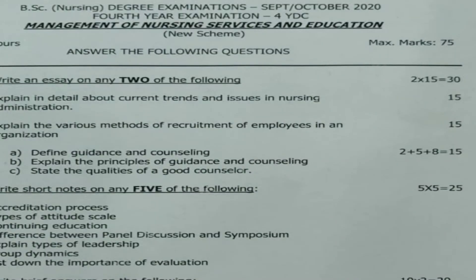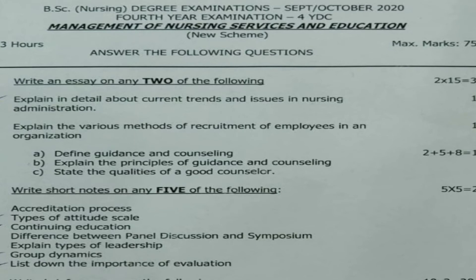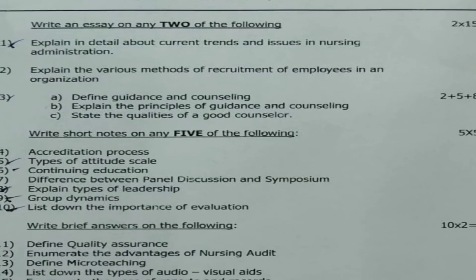For the essay section, you have to answer two questions out of three, with each question carrying 15 marks, totaling 30 marks. The first question asks to explain in detail about current trends and issues in nursing administration. The second question asks to explain the various methods of recruitment of employees in an organization. The third question is divided: define guidance and counseling (2 marks), explain the principles of guidance and counseling (5 marks), and state the qualities of a good counselor (8 marks), totaling 15 marks.